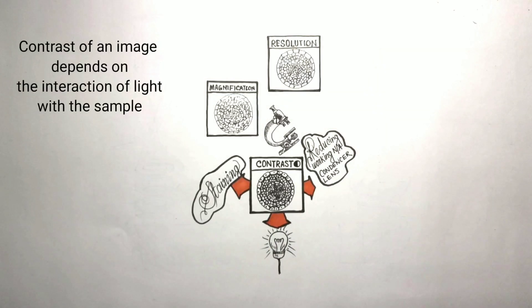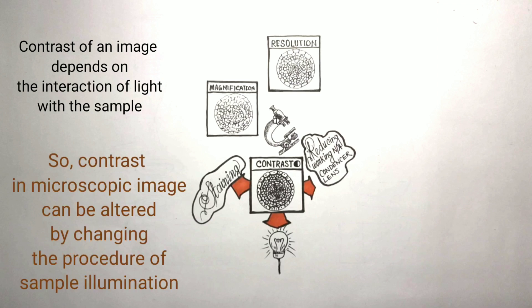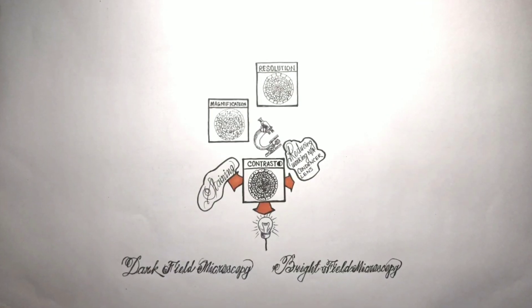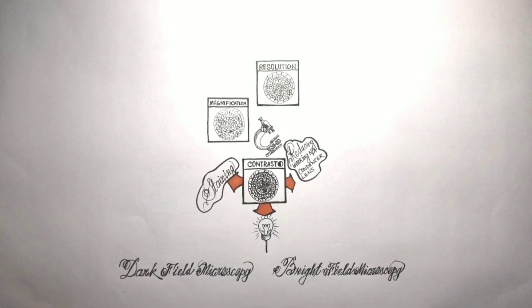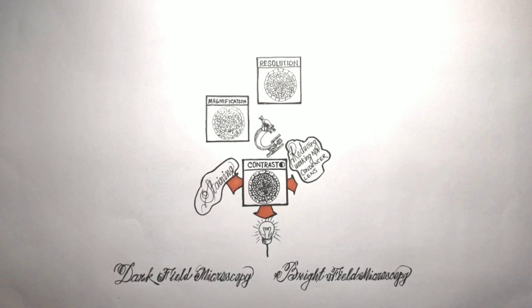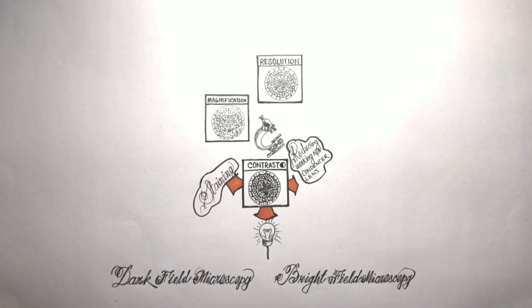Is there any other way to enhance contrast in microscopy? The answer is yes. Contrast is not an inherent property of the specimen but depends on the interaction of specimen and light. By changing the illumination technique, we can enhance contrast. There are two microscopic methods depending on illumination techniques: bright field microscopy and dark field microscopy.